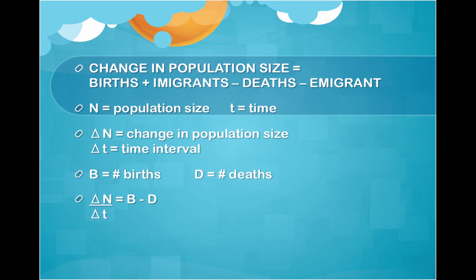Change in population size is equal to births plus immigrants entering minus deaths minus emigrants leaving. Change in N is the population size, change in T is a time interval like a lifespan or a generation time. Capital B is equal to the number of births, and capital D is equal to the number of deaths. Therefore, change in N over change in T is equal to B minus D.